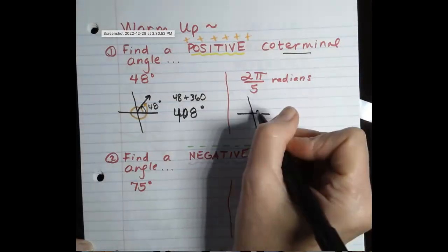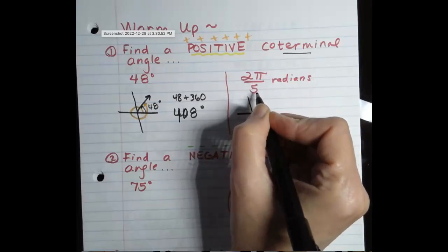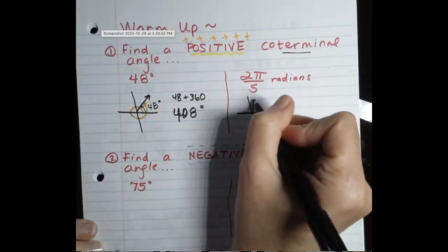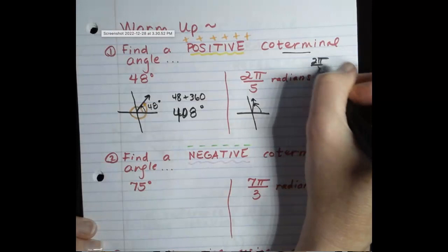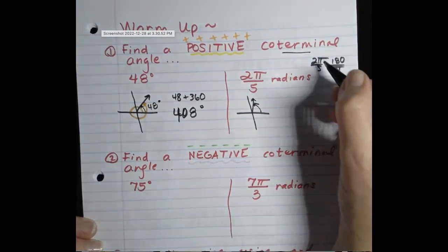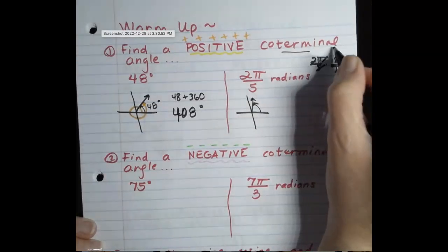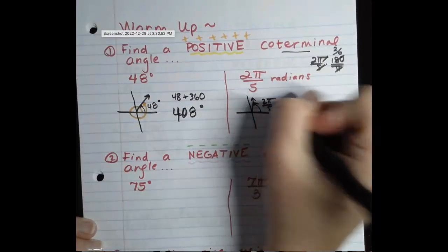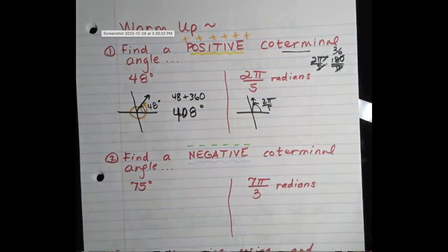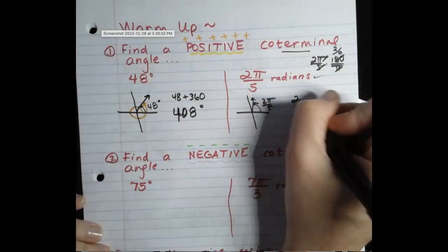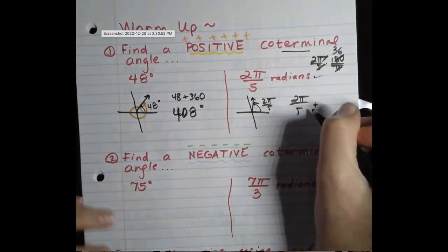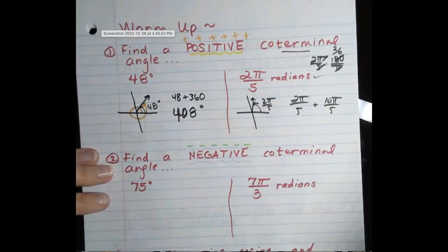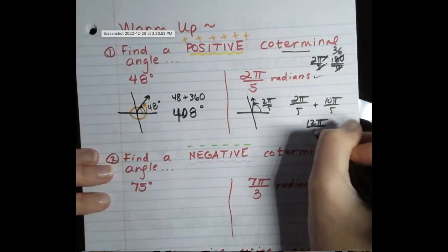So is 2 fifths bigger than 1 half? No. So we know that 2π over 5 is also in the first quadrant. If we wanted to change it to degrees, that would be 2π over 5 times 180 over π — cancel the π's, cancel the 5 — it would be 72 degrees. If we start a problem in radians, we need to finish in radians. Adding 360 in radians is just 2π, so 2π with 5 as a denominator will be 10π over 5.